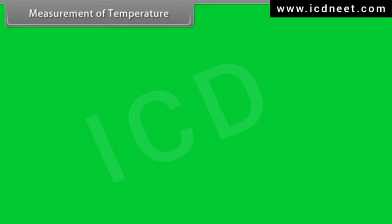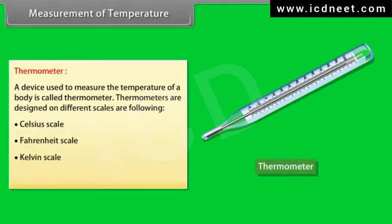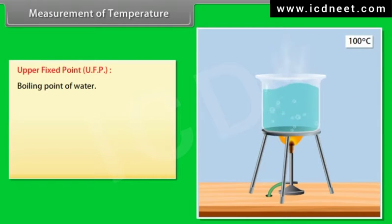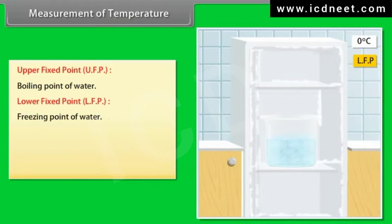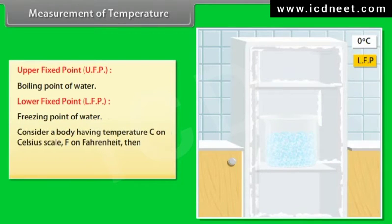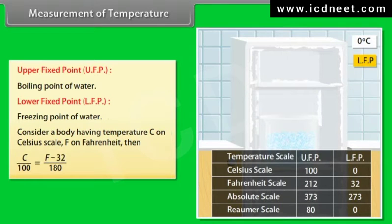Measurement of temperature: A device used to measure the temperature of a body is called a thermometer. Thermometers are designed on different scales: Celsius scale, Fahrenheit scale, Kelvin scale, and Réaumur scale. Boiling point of water is known as upper fixed point. Freezing point of water is known as lower fixed point. For a body having temperature C on Celsius scale and F on Fahrenheit scale, C upon 100 is equal to F minus 32 upon 180.